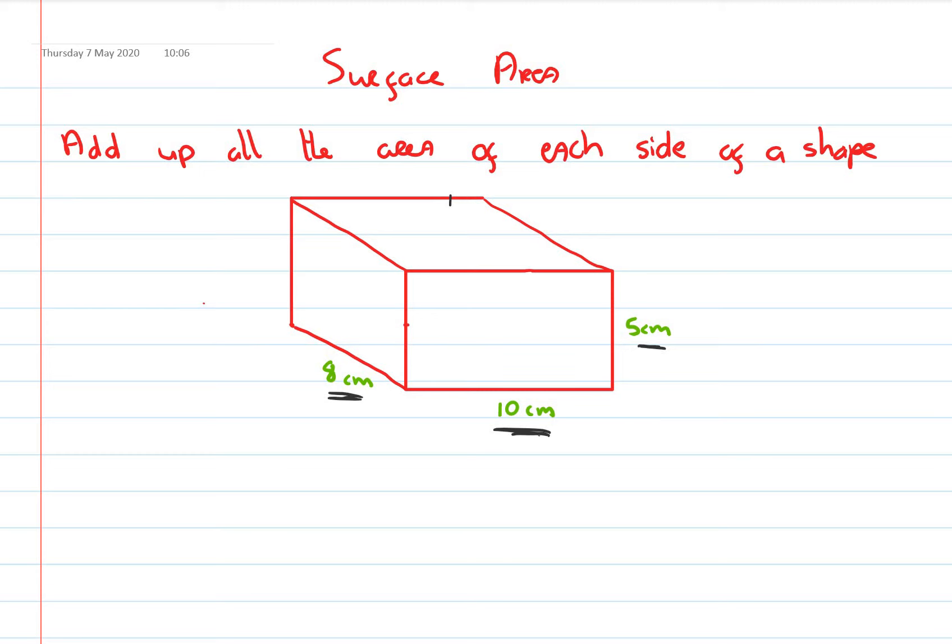Generally what I will do is I'll sketch all the sides of the box and I'll put in their dimensions and then I'll find the area of each side. So for instance, I'll do the front of the box. So the front of the box is 10 width, 5 high.